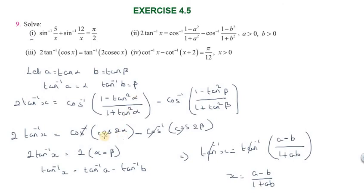So we get 2tan⁻¹x = cos⁻¹(cos2α) - cos⁻¹(cos2β). Since cos⁻¹ and cos cancel each other, this becomes 2tan⁻¹x = 2α - 2β. Factoring out 2, then cancelling from both sides, we get tan⁻¹x = α - β.